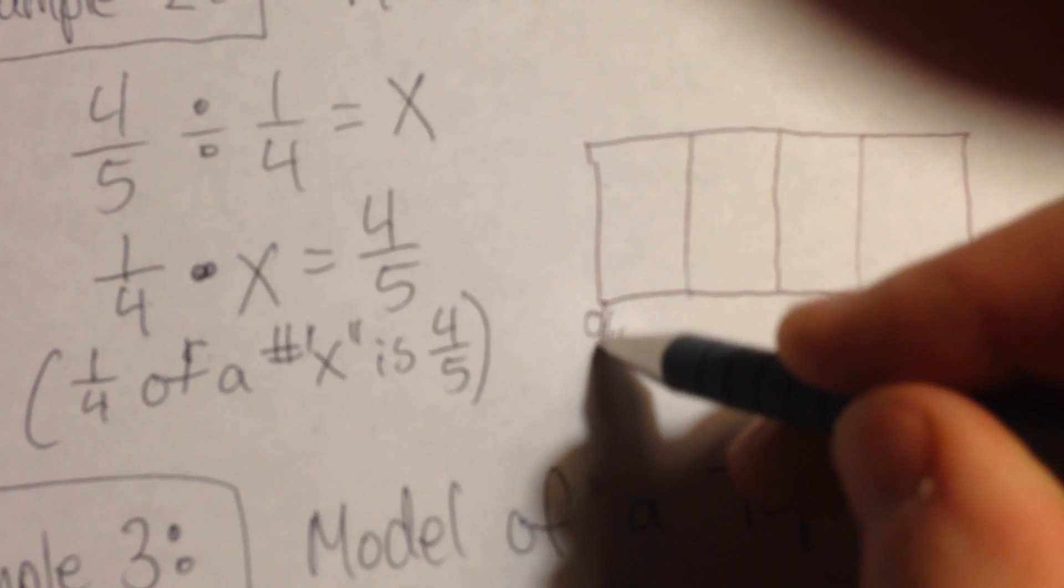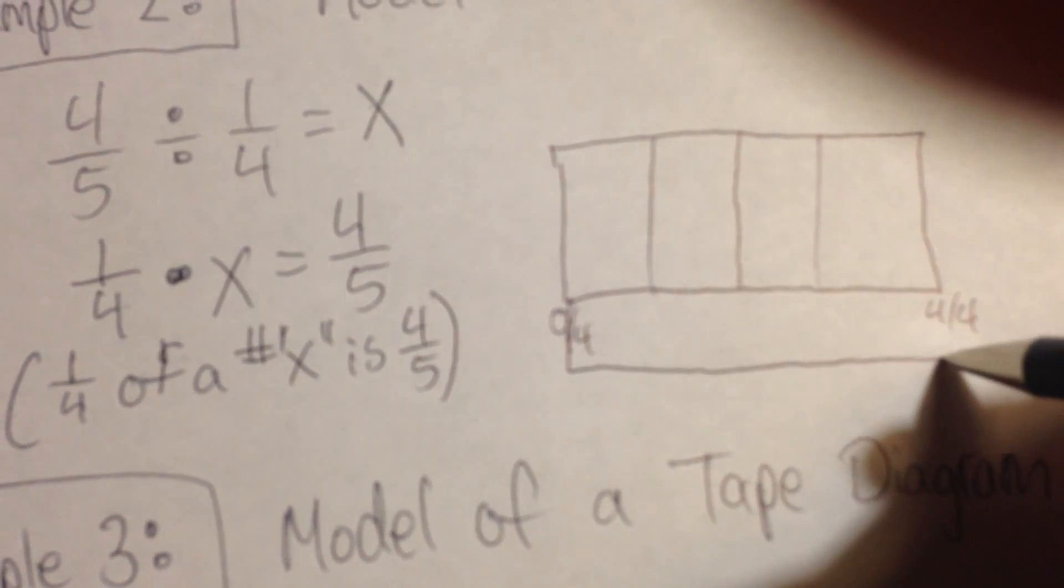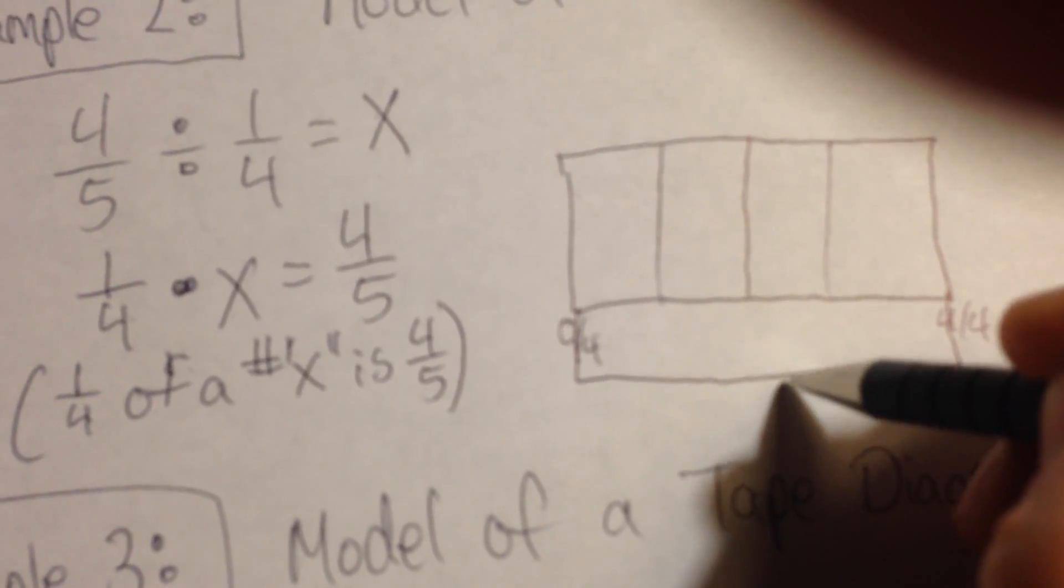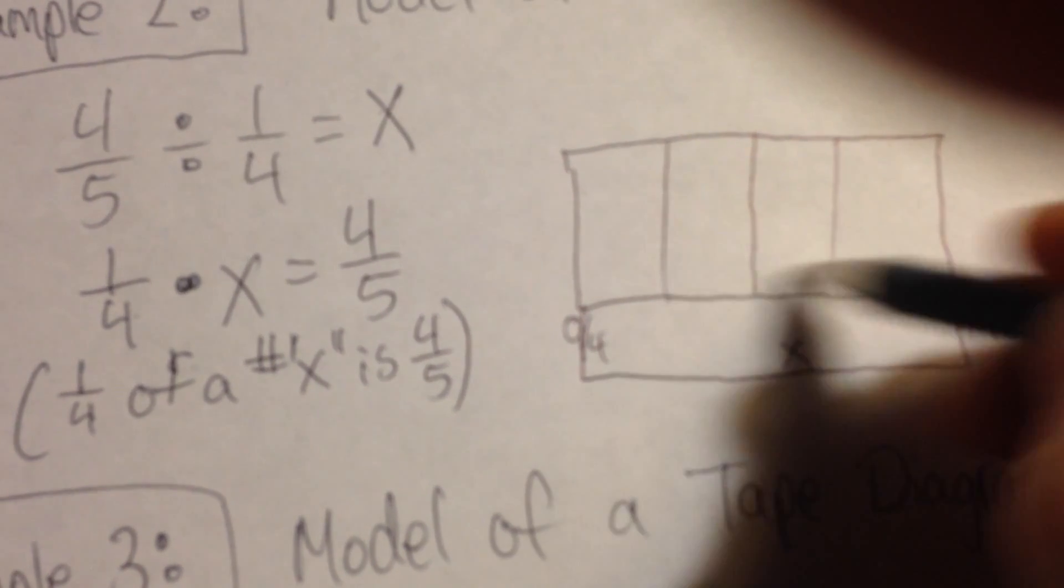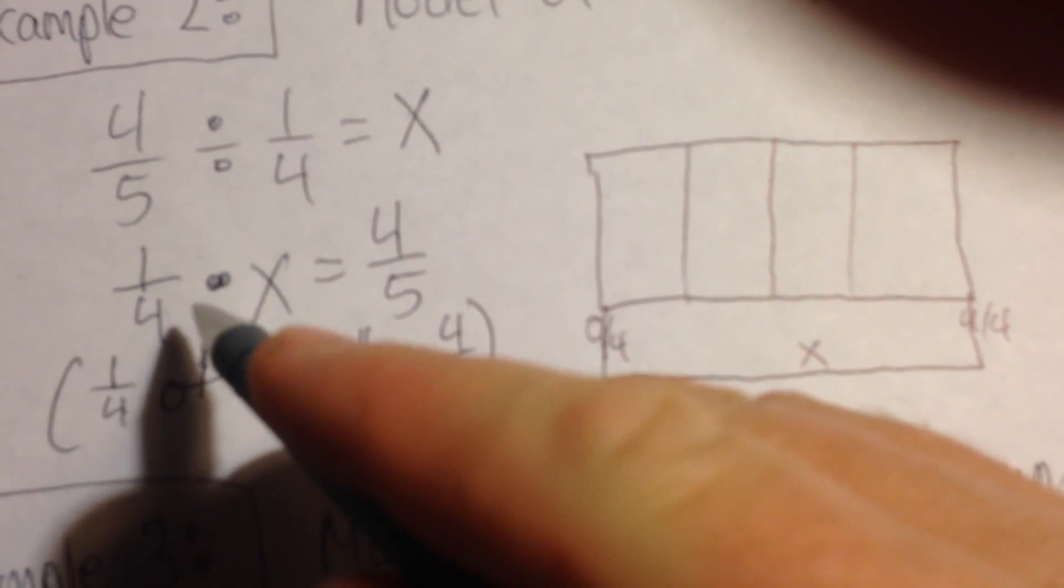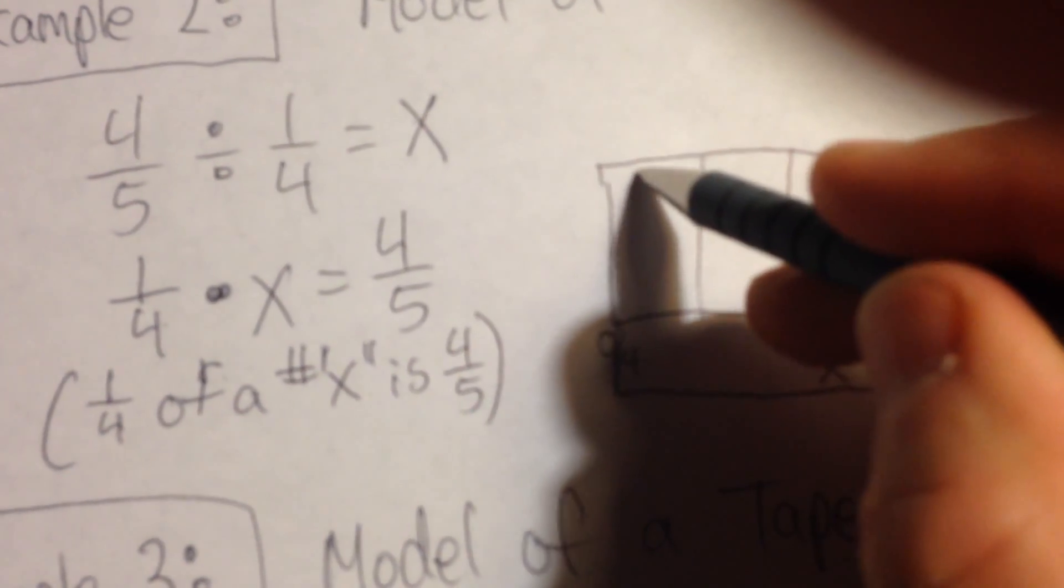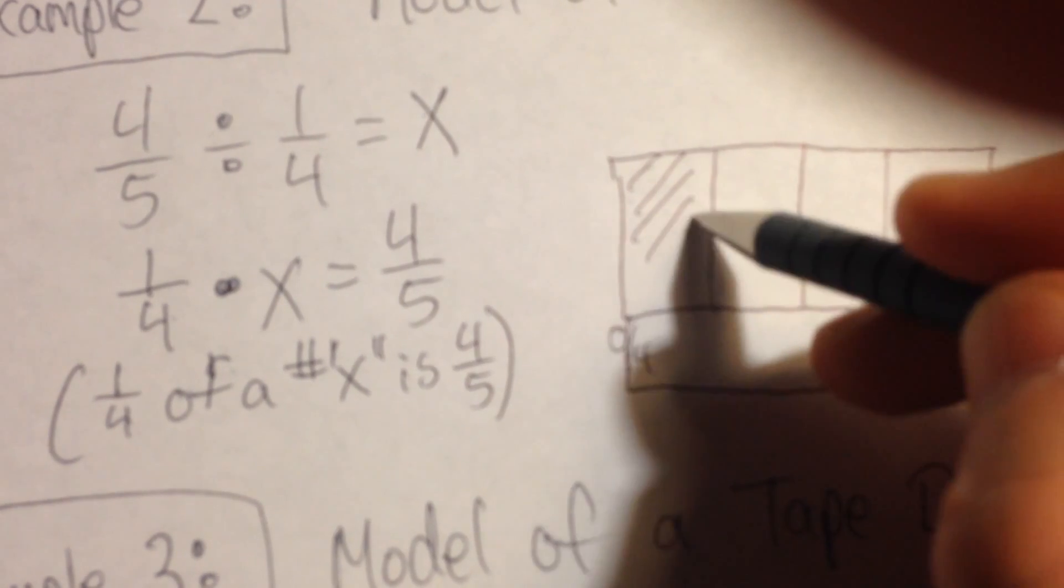And this represents, when I draw my bracket in, that represents my unknown, which is x, the whole thing. And I forgot one step when I started, that I have one-fourth, so I need to color that.